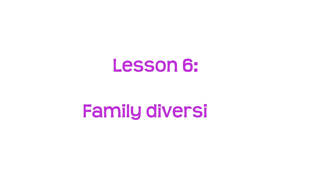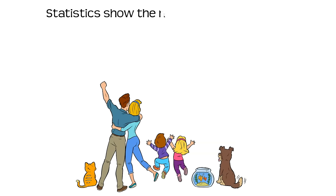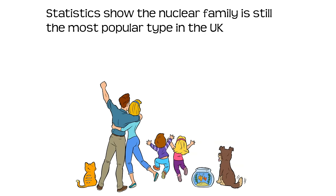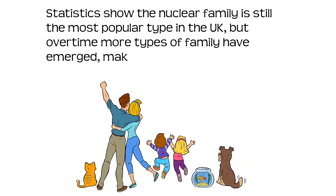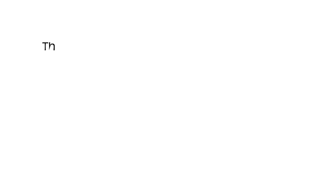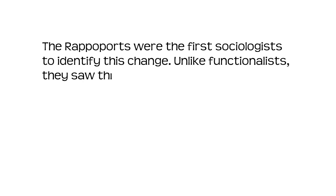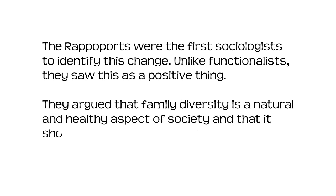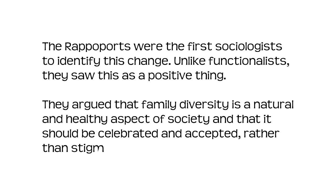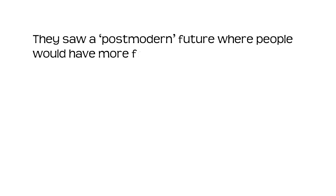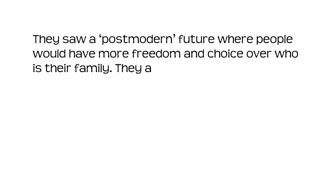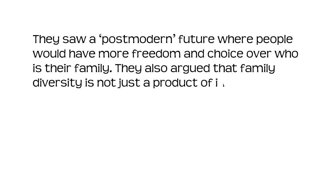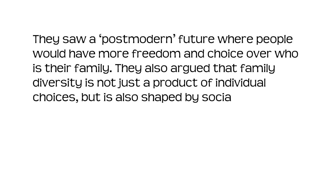Lesson six: family diversity. Statistics show the nuclear family is still the most popular type in the UK. But over time, more types of family have emerged, making the nuclear family less important. The Rapoports were the first sociologists to identify this change. Unlike functionalists, they saw this as a positive thing. They argued that family diversity is a natural and healthy aspect of society and that it should be celebrated and accepted rather than stigmatised or pathologised. They also argued that family diversity is not just a product of individual choices, but is also shaped by social, economic and political factors.